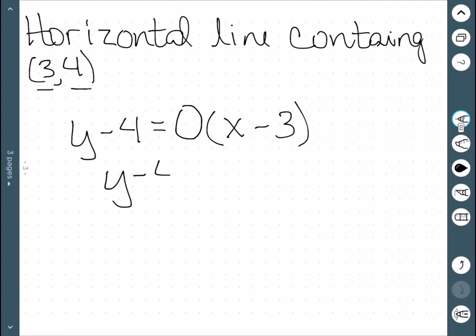If we wanted to, we could rewrite this as y - 4 = 0. And if I add 4 to both sides, I get y = 4. This is the general form of a horizontal line.